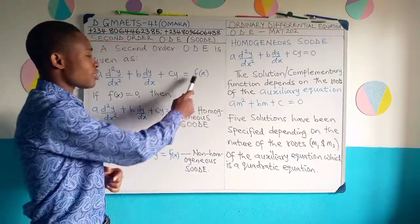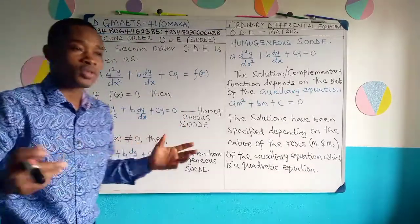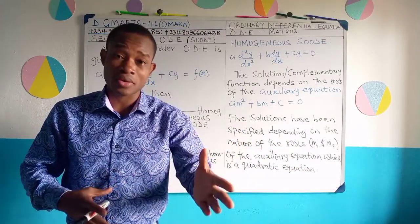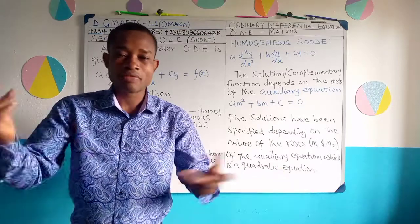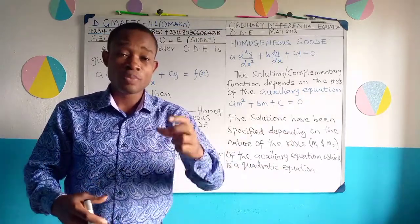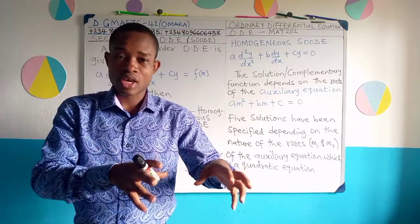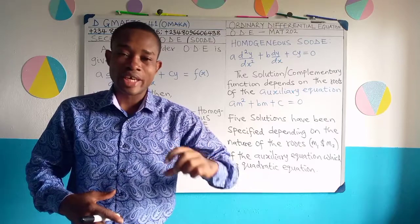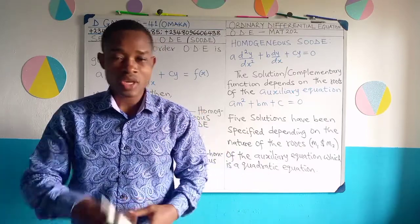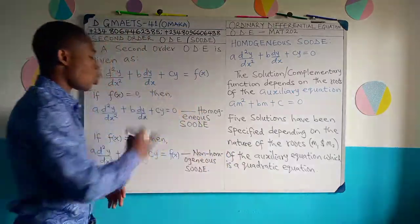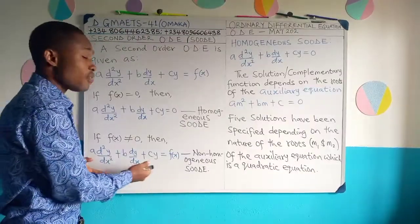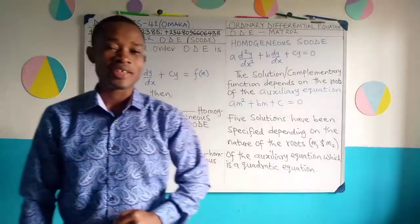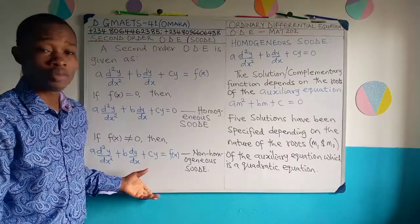If f(x) is not equal to zero — it could be a non-zero constant like 1, 5, or −3, or a polynomial function, a trigonometric function, or an exponential function — then we refer to that SODE as a non-homogeneous second-order ordinary differential equation.